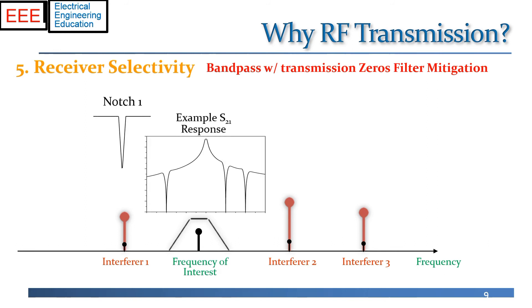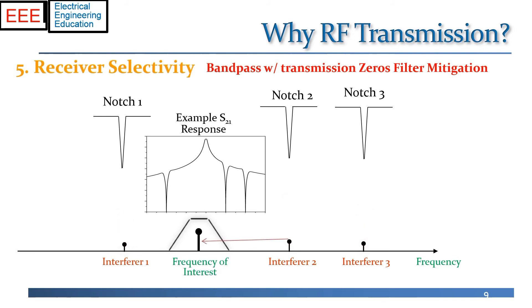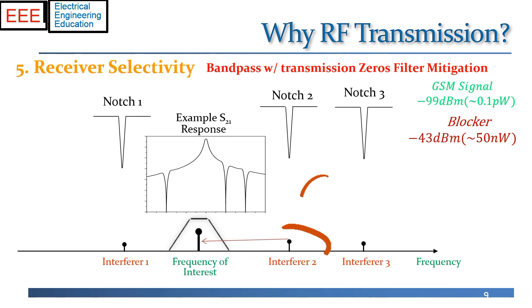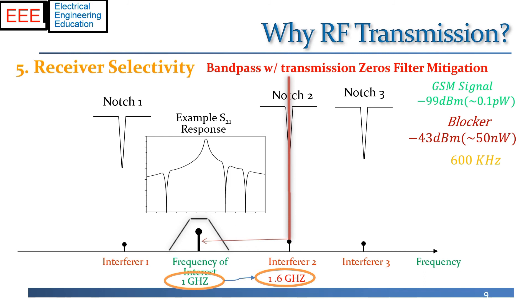Let's look at a real-life scenario with actual numbers. Say we're trying to receive a GSM signal at minus 99 dBm, which is roughly 0.1 picowatt. The GSM standard requires that this signal must be received in the presence of a blocking signal at approximately minus 43 dBm — about 50 nanowatts — which is significantly stronger than the signal of interest. And this blocker is only 600 kilohertz away from the signal of interest. That interferer is approximately 400,000 times stronger, yet sitting only 0.03% away from the main frequency.